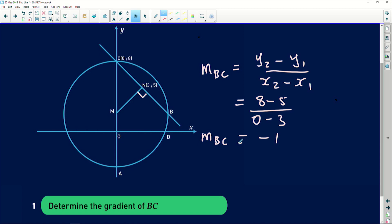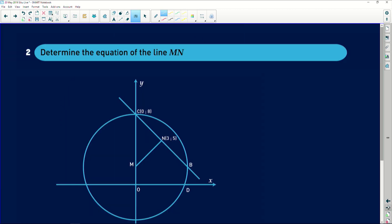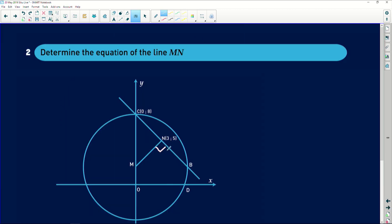Let's move on to the next one. The second question is saying, remember that this is perpendicular and we have worked out that the gradient of BC is equal to negative 1. We need that information. Determine the equation of the line MN.